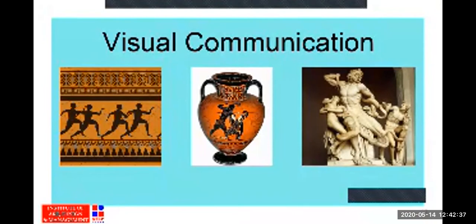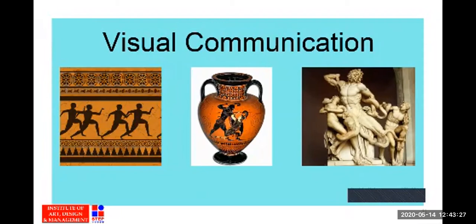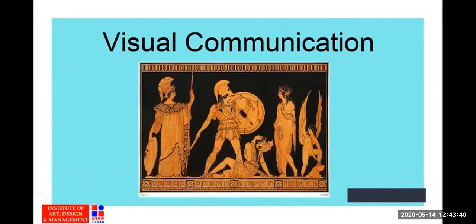Greek civilization was very much into visual communication. The Olympic Games were visually communicated through art. Vase paintings show racing scenes from the Olympics. Another vase shows a fighting scene where one person is overpowering another, with expressions communicating the action. A statue of Zeus with heavenly characters communicates a sense of struggle and serenity through the sculpture.